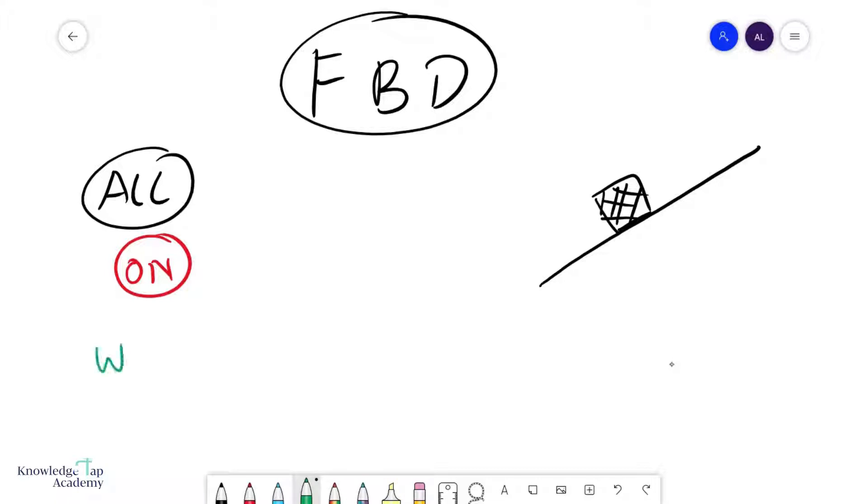Usually there's almost always a weight, and there's almost always normal contact forces. If there are strings involved, there will be tensions, and of course sometimes there's friction. These are the four common ones. You can get other forces like upthrust or drag, but you have to really look at the situation.